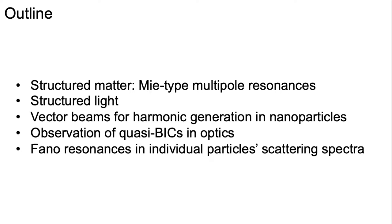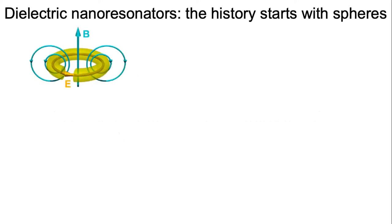How vector beams can help us observe optical quasi-BIC modes and detect Fano resonances in scattering spectra of nanoparticles. Ten years ago, when someone spoke about single nanoparticles, they usually spoke about metallic ones which support plasmonic resonances or could support some magnetic response.